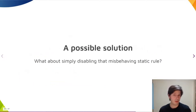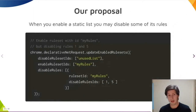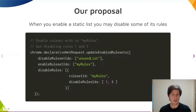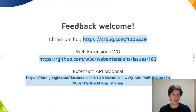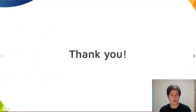So from our point of view, it would be much easier to be able to simply disable the problematic static rule. And that's exactly what we've been working on. We are working on an API proposal to, optionally, add a collection of disabled rules at the point where the extension enables and disables static lists. We are discussing this proposal mainly on the Web Extensions Working Group, so if this sounds like an interesting problem and got your curiosity, then please drop by and leave your feedback. Thank you very much.